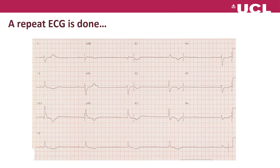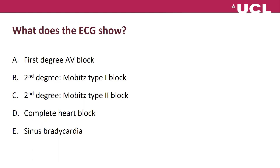A repeat ECG is performed. Pause here to review it. Question: what does this ECG show? A) first degree AV block, B) second degree Mobitz type 1, C) second degree Mobitz type 2, D) complete heart block, E) sinus bradycardia.